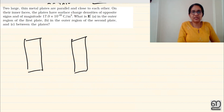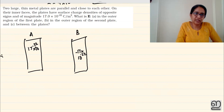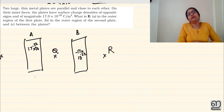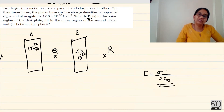The charge values are plus and minus 17 into 10 raised to minus 22, which are equal and opposite. This concerns two parallel conducting plates — plate A and plate B — with regions P, Q, and R. The electric field E from each plate is calculated using the equation sigma divided by 2ε₀, where sigma is the surface charge density.